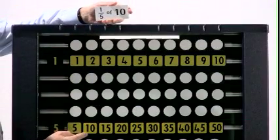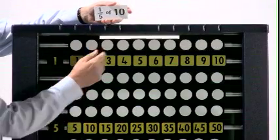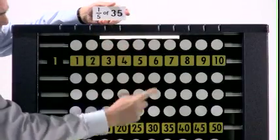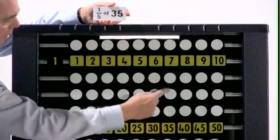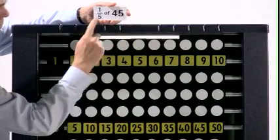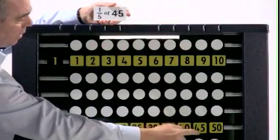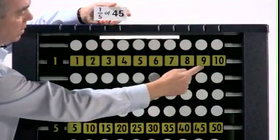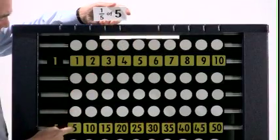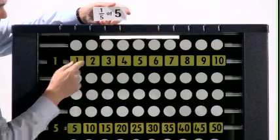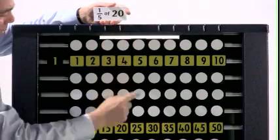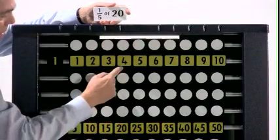One fifth of ten is two. One fifth of thirty-five is seven. One fifth of forty-five is nine. One fifth of five is one. One fifth of twenty is four.